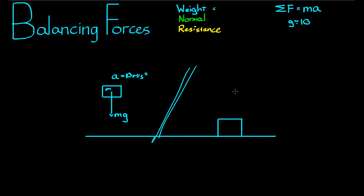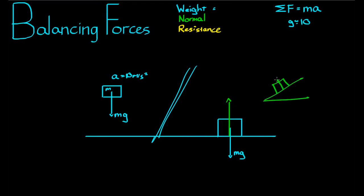It is not that gravity has been switched off — the force of gravity is still acting on this block, which is why if you were to go and try to pick it up you would have to overcome that force. What is happening is that another force is now acting on this block so that the sum of forces is zero, and that force is the normal force — the pressing force of the ground on the block. The normal force always acts at right angles to the surface, and it's given by n.